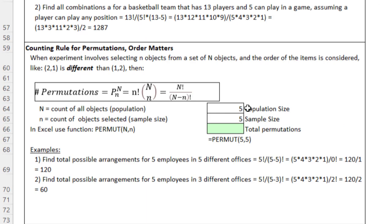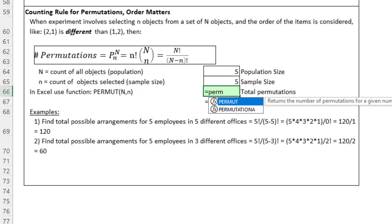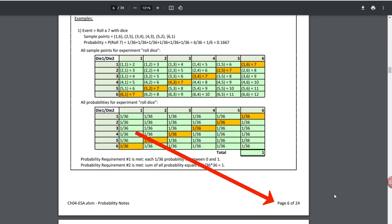For the counting rule for permutations — where order matters — we have the permutation formula. To find total possible arrangements for 5 employees in 5 different offices, population and sample size are both 5, giving 120 permutations. Using the PERMUT function: PERMUT(number, number_chosen), select the population size G64, comma, sample size. Hit Enter.